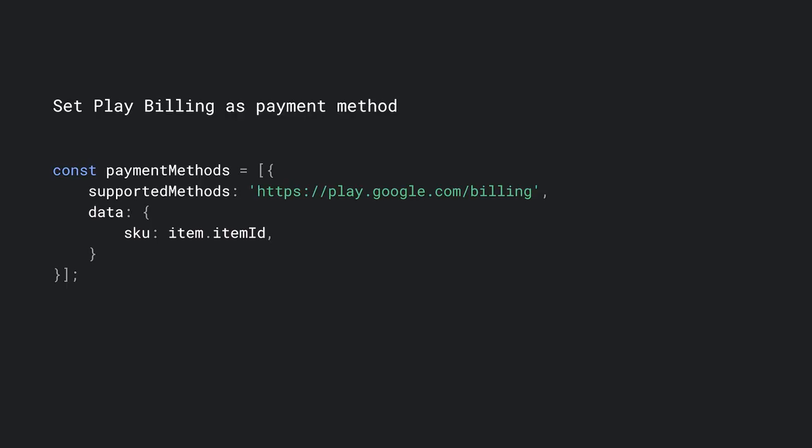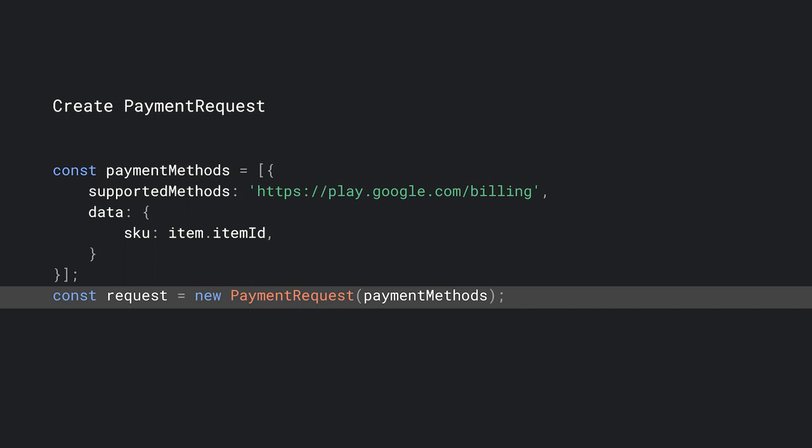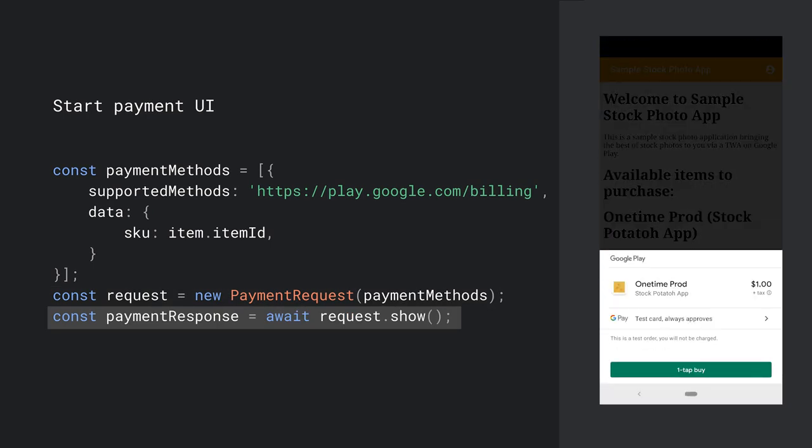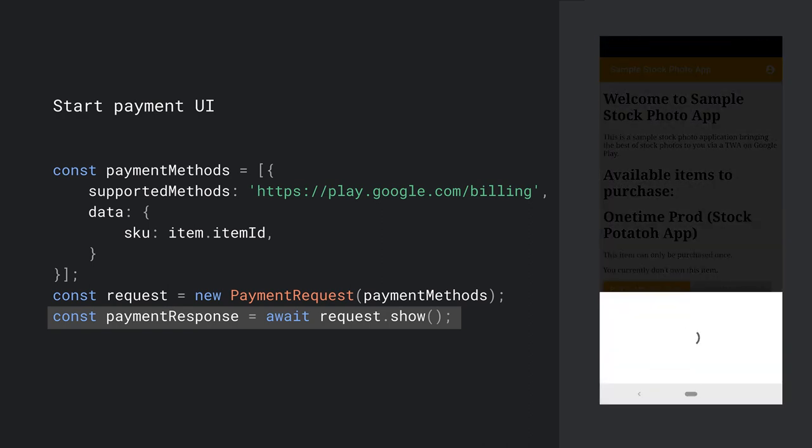Now that the user can see product details, they will probably want to buy something. You can use the PaymentRequest API to handle the purchase flow with the help of the Google Play Store. The Google Play Store is already aware of products because you've added them to the Play Console, so you don't need to pass the cost information to the PaymentRequest API. To let the PaymentRequest API know that you want to use Play Billing, set the supported methods field to the URL play.google.com/billing. You can tell the Play Store which item the user is trying to purchase by setting the SKU member in the Data object to be the product ID of the item being purchased. Note that Play Billing only allows one item to be purchased at a time. Create a new PaymentRequest, then call Show on the PaymentRequest object to kick off the payment flow — this will display the Play Purchase UI to the user.